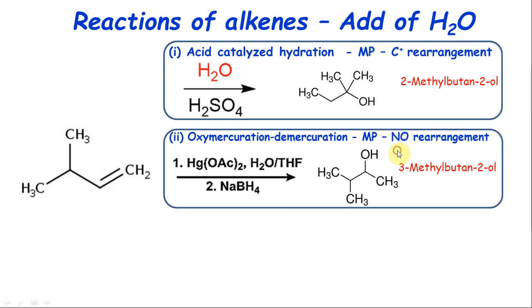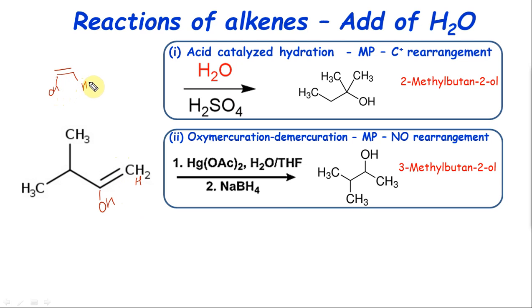The second method is oxymercuration-demercuration: mercuric acetate, H₂O, and THF (just a solvent). This gives an intermediate compound which on reacting with NaBH₄ (reducing agent) gives the corresponding alcohol. The mechanism is not in the scope of NEET and JEE mains. The product is the Markovnikov alcohol — but no rearrangement occurs. Markovnikov product means the carbon with more carbons gets OH.